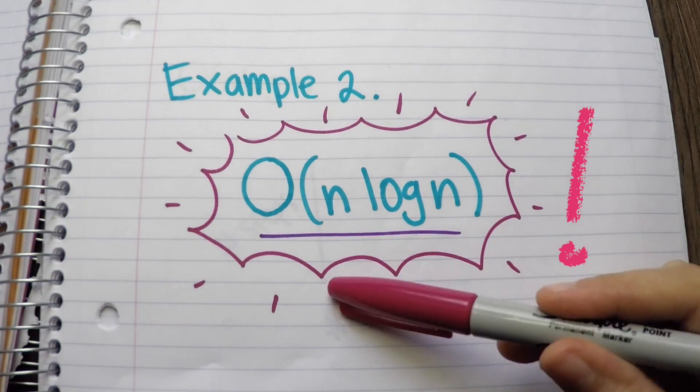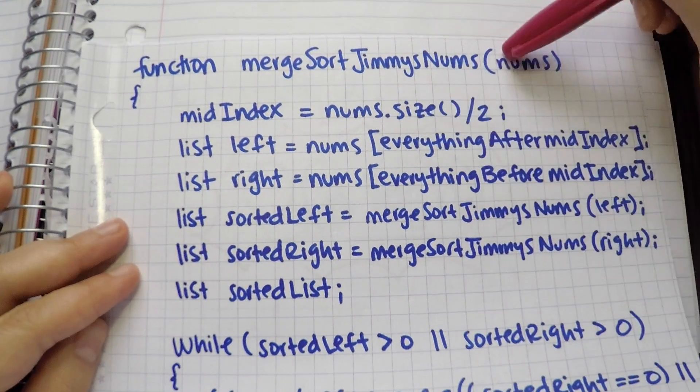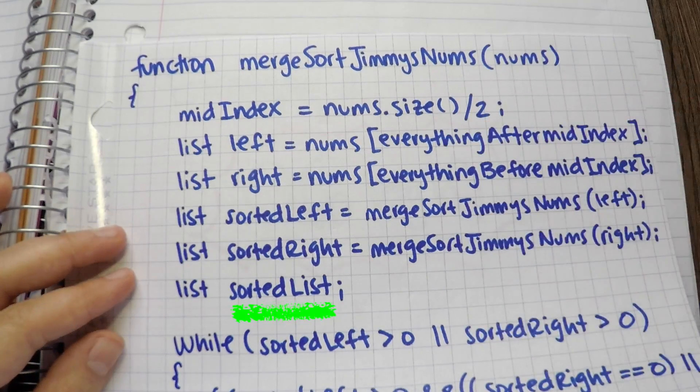Example 2, O(n log n). This pseudocode is taking a list of numbers, splitting the list until we have many lists of one, and then we merge and sort until we have one sorted list.